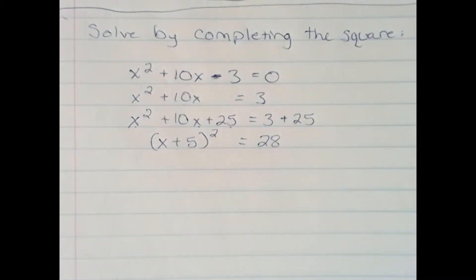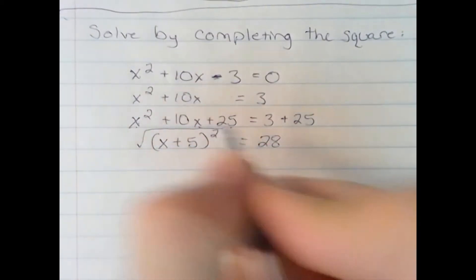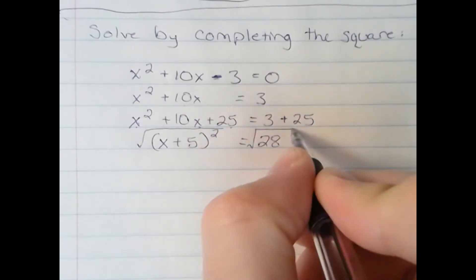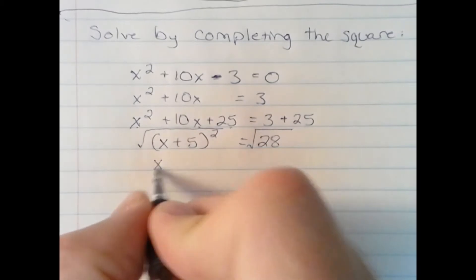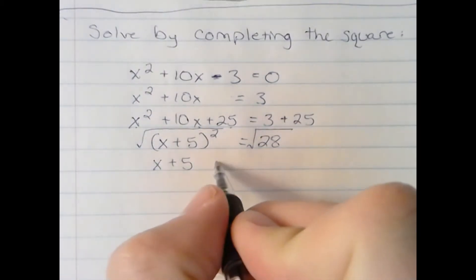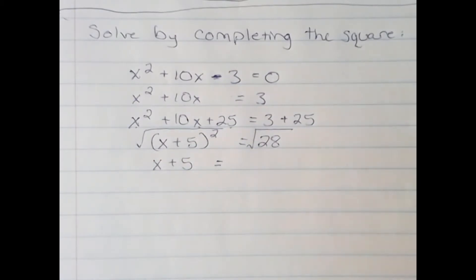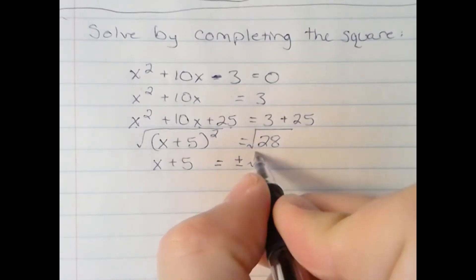At this point, we'll take the square root of both sides. The square root of an object squared is itself the original term. Over here, we do have plus or minus the square root of 28.